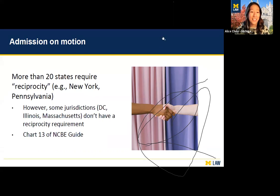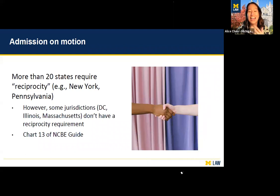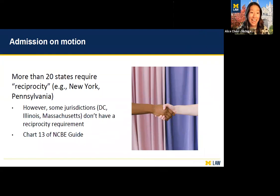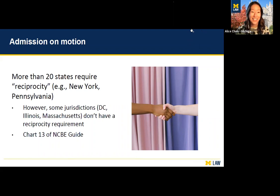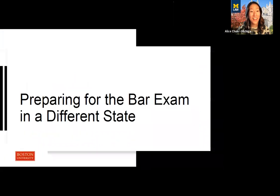When you hear about admission on motion, you might also hear the word reciprocity — some states will allow admission on motion only if the other state returns the favor. However, some jurisdictions like DC, Illinois, and Massachusetts don't have a reciprocity requirement. Chart 13 of the NCBE guide is a great resource for reciprocity requirements. Parsing the rules for practicing law in other jurisdictions can be really complicated, but with resources like the NCBE guide and time to do your research, you can navigate this process successfully.